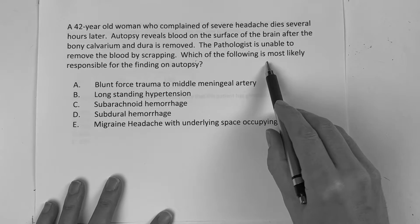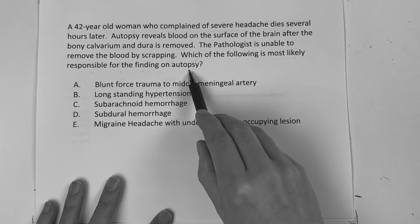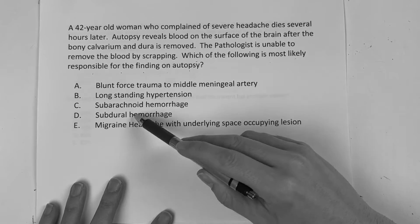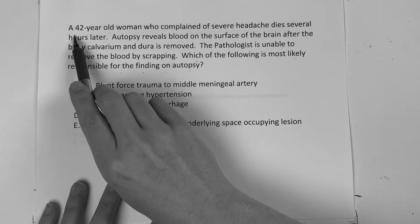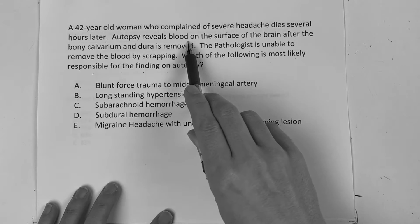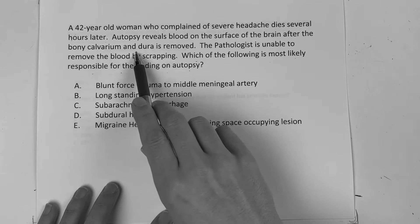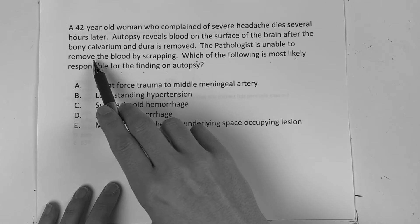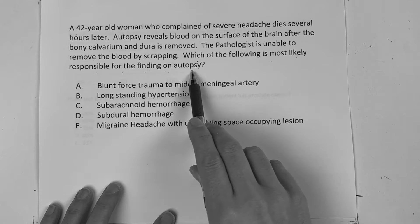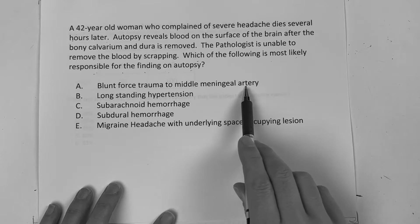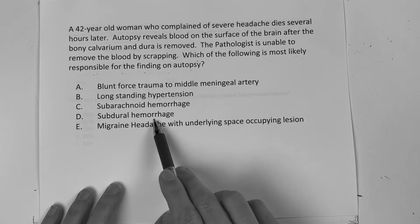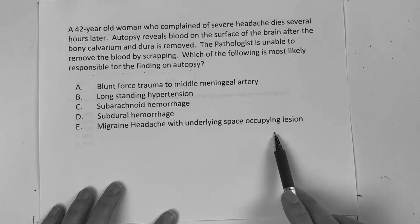The question reads: which of the following is most likely responsible for the finding on autopsy? Scan your answer choices — they're talking about hemorrhages, subdural, subarachnoid. A 42-year-old woman who complained of severe headache dies several hours later. Autopsy reveals blood on the surface of the brain after the bony calvarium and dura is removed. The pathologist is unable to remove the blood by scraping. Answer choices: A) blunt force trauma to the medial middle meningeal artery, B) long-standing hypertension, C) subarachnoid hemorrhage, D) subdural hemorrhage, E) migraine headache with underlying space-occupying lesion.